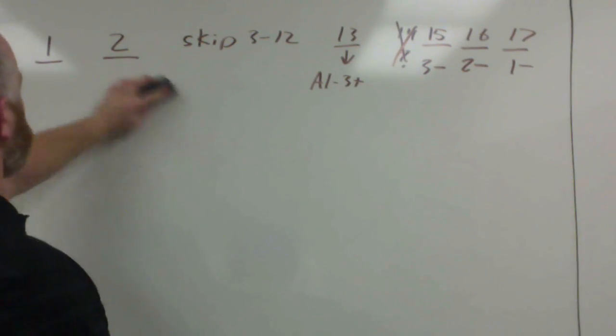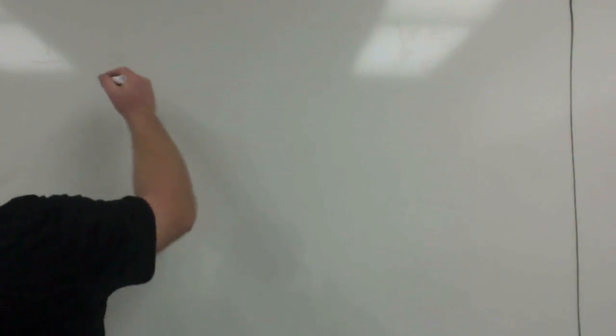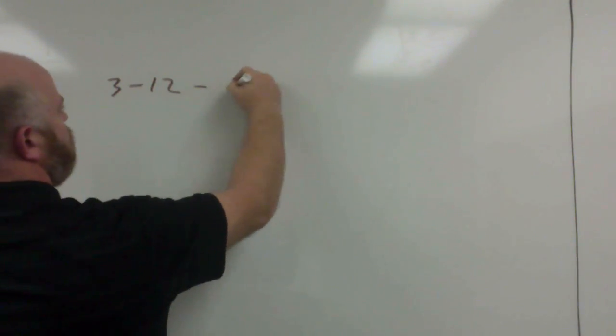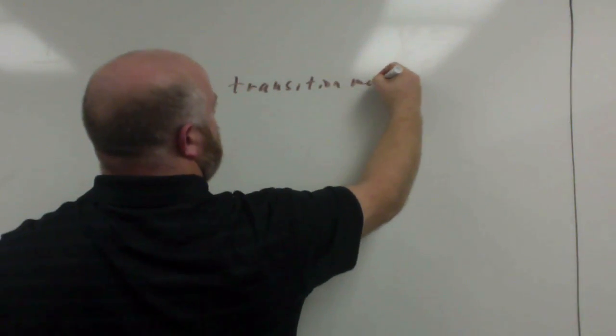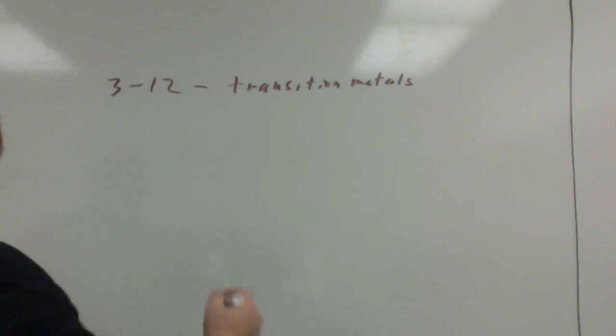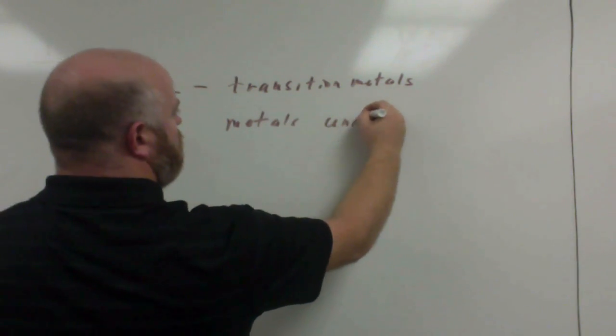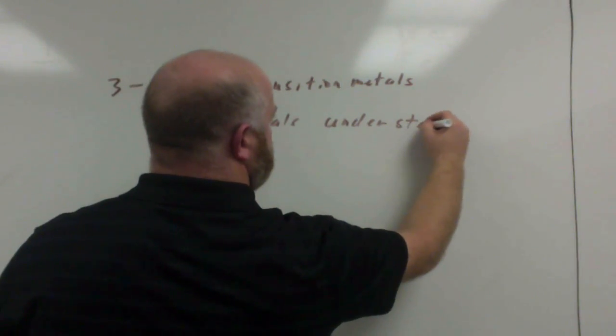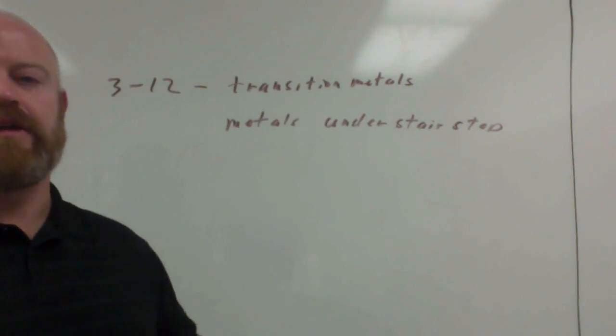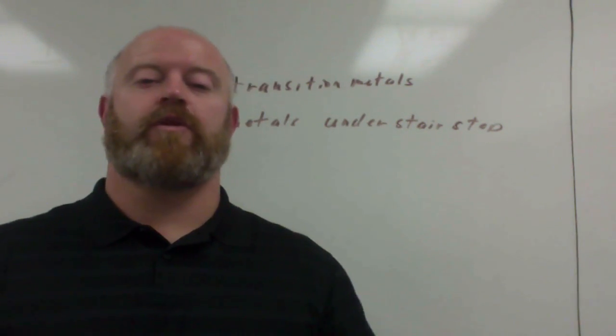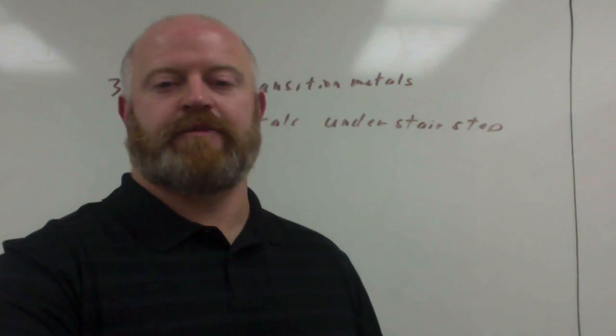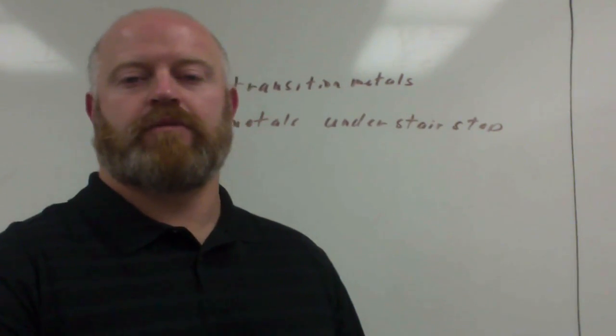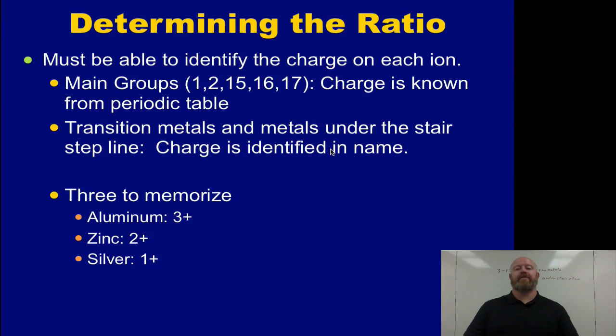Now, for the groups that we skipped in the middle, groups 3 through 12, also known as our transition metals, and then any metals under the stair-step line, we have to deal with those a little bit differently because we don't know their charges. When we work with these metals, the transition metals and metals under the stair-step, by writing out the compound, we wouldn't know their charge. Instead, we have to use something in the naming system to identify that charge.